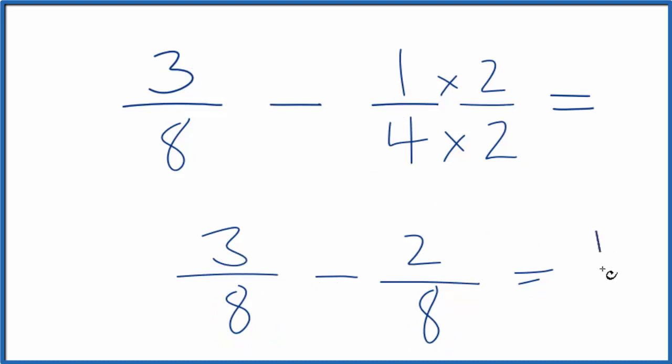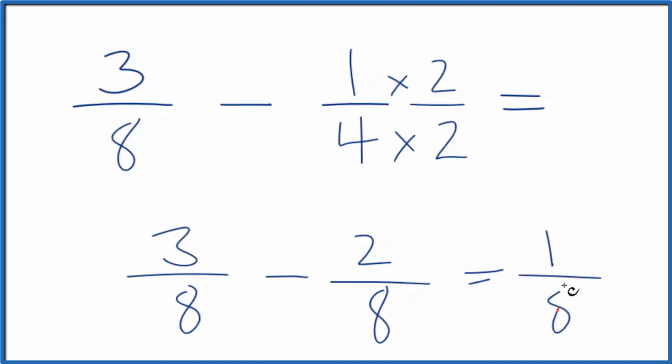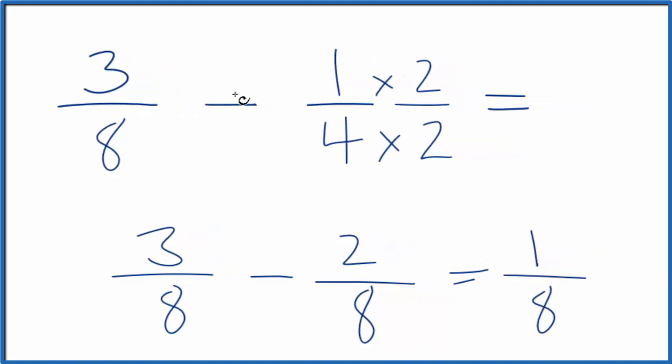So 3 minus 2 is 1, bring the 8 across. 3/8 minus 1/4 equals 1/8.